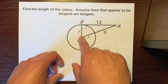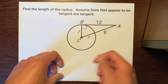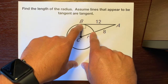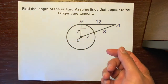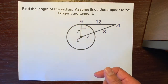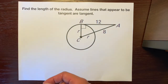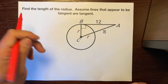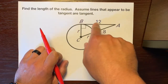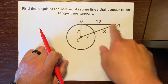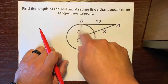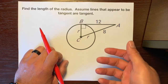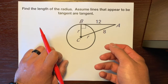These two lines are radii, because they both start at the center and go to the circle. So these segments are radii. Let's start doing some math. Because this line is tangent, it makes a right triangle, and we have information about this right triangle. So we can use that famous theorem, the Pythagorean theorem.